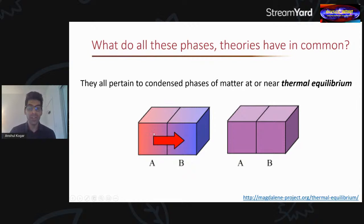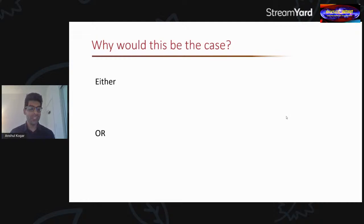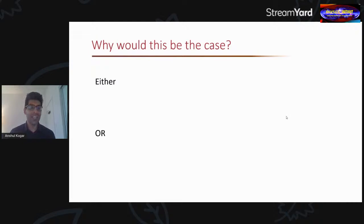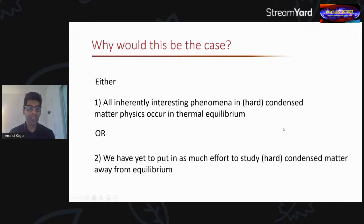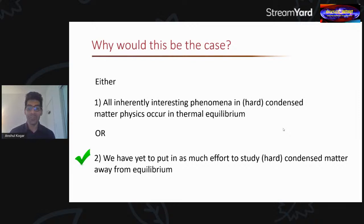So the question arises: why have we only studied matter in equilibrium over the last hundred years? There are two possible reasons: either all interesting phenomena in condensed matter physics occur in equilibrium, or we have yet to put in enough effort to study condensed matter systems away from equilibrium. Personally, I hope it's the second, because that's what I spend a lot of my time doing, hoping to make some interesting discoveries — but it remains relatively underexplored.